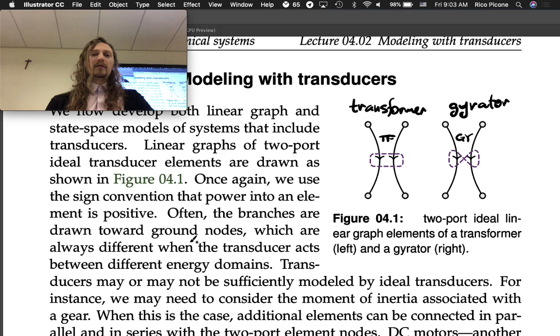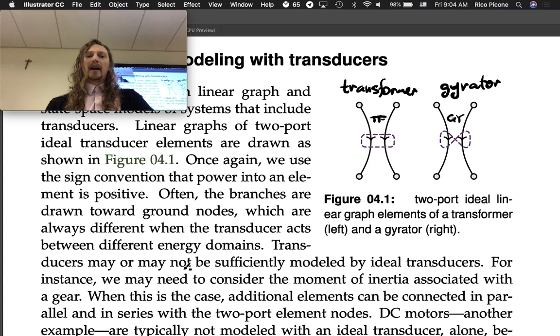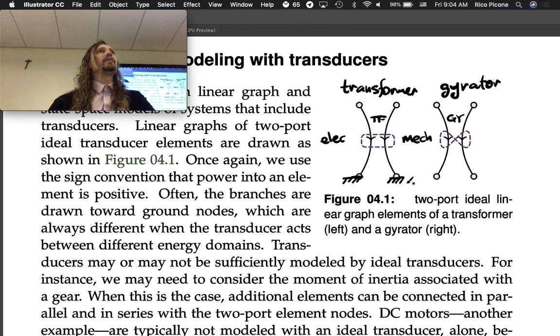Once again, we use the sign convention that power into an element is positive. Often the branches are drawn toward ground nodes, which are always different when the transducer acts between different energy domains. If over here you've got electrical and over here you've got mechanical, then if this goes to ground on each side, then these two grounds are different. This is zero voltage, this is zero velocity.